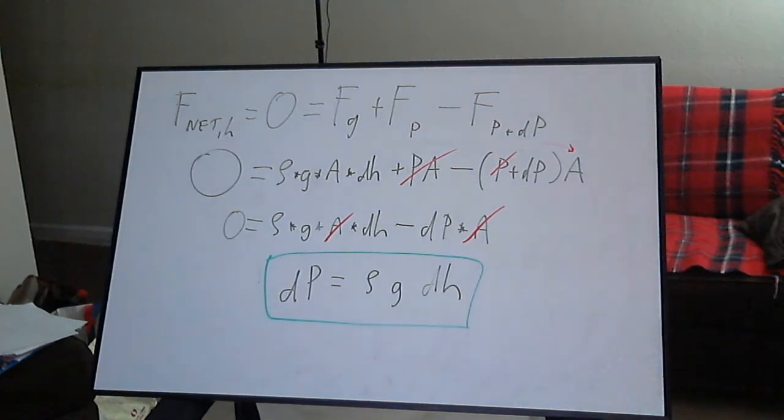This is the basic differential equation for pressure with depth for a fluid in hydrostatic equilibrium. At this point, the pressure with depth expression will depend on how density also may change with pressure.